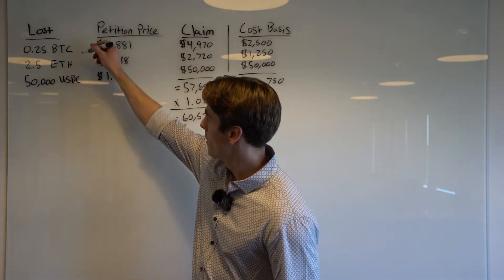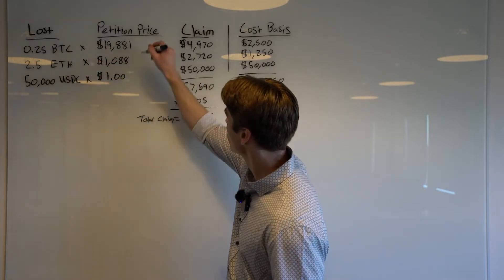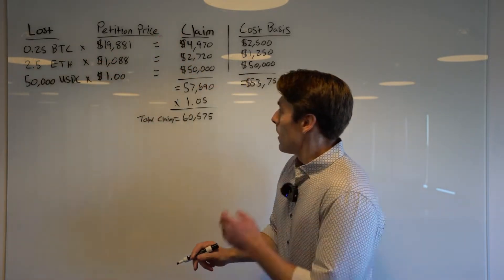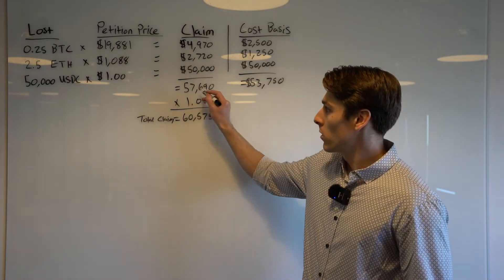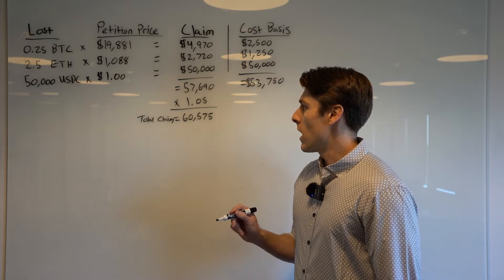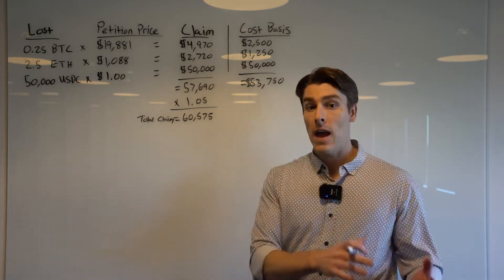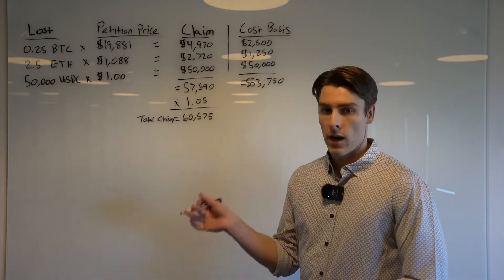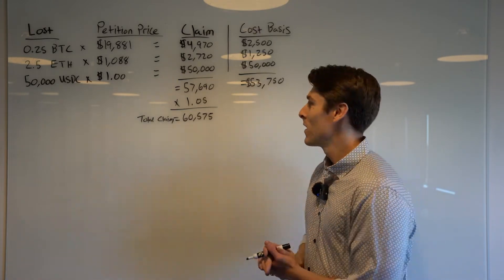Using the petition prices at that time — which for all the assets on Celsius we have listed out in the article — we are able to calculate our claim value. It's pretty simple: you multiply the quantities by the prices to get the value for each asset. Adding these up gives us the total claim. You have a 5% markup unless you specifically opted out of the class settlement claim. If you did not do that, or you don't know what I'm talking about, then this 5% applies to you.